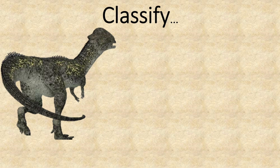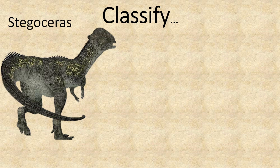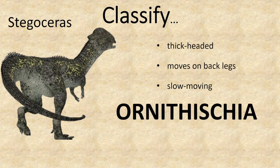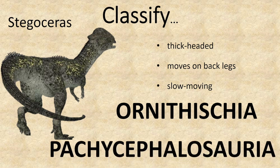Lastly, we have another dinosaur with a feature that stands out more than the others. This is a Stegoceras. The most obvious feature is that it's thick-headed, and it also moves on its back legs, making it quite a slow-moving dinosaur. It's in the Ornithischia group, and dinosaurs with thick-headed features belong in the Pachycephalosauria subgroup.